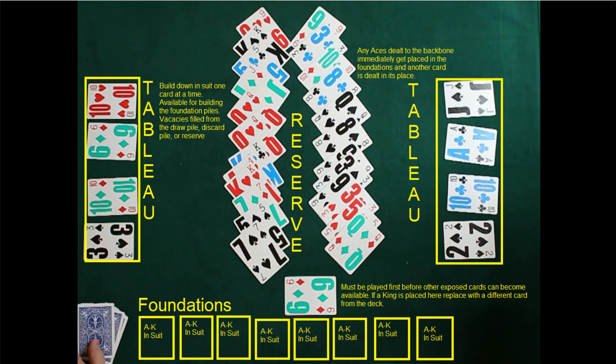The spinal column in the middle will be the backbone, the reserve. You have to play that six of diamonds, whatever the bottom card is, down there first. Anytime you see an ace in the backbone, go ahead and put it down to the foundation and replace it with a different card.